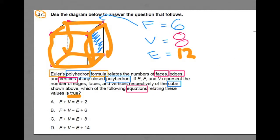Euler's formula can be written in a bunch of different ways, but usually we see it like this: Faces plus vertices minus edges is equal to two.